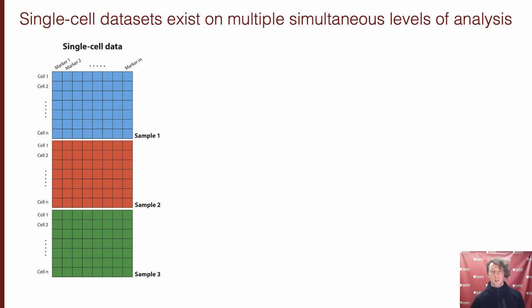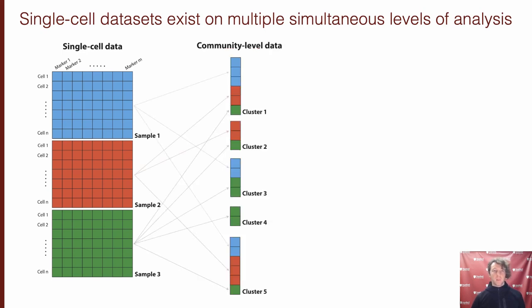On one hand, you might be interested in answering questions on the level of individual cells, where you can think of the data from each sample as represented by its own data frame, in which each row represents a cell and each column represents a protein measurement. At the same time, you may also be interested in how cells organize into communities or clusters based on shared characteristics regardless of what sample they come from, and those communities or clusters can be of varying sizes with varying composition.